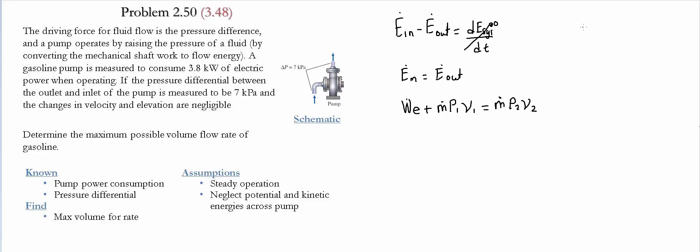Recall the definition of mass flow rate: mass flow rate equals density multiplied by volume flow rate. Therefore, mass flow rate divided by density, which is the same as mass flow rate times specific volume, equals the volume flow rate.